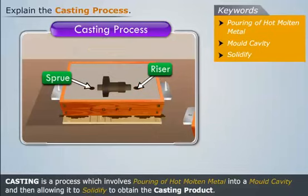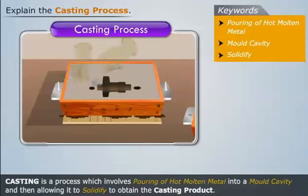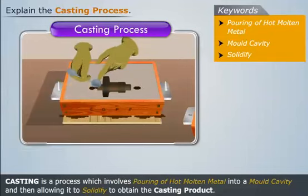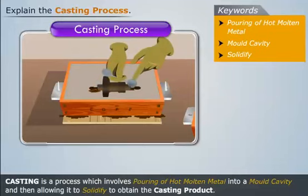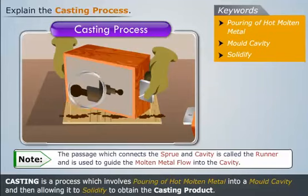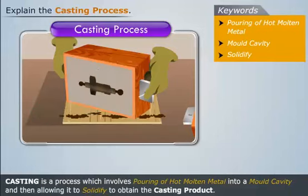Then use the draw spike to pick the pattern out of the sand from the drag and cope. The shape left in the mold is called the cavity. Then make a passage between these holes and the cavity with the help of a spoon slick. Note that the passage which connects the sprue and cavity is called the runner and is used to guide the molten metal flow into the cavity.